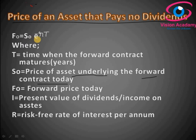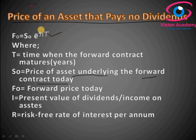E is the mathematical irrational number, approximately 2.718. R is the risk-free rate of interest per annum, and T is the time when the forward contract matures. So the formula is F0 = S0 × e^(RT), where S0 is the contracted price today, R is the risk-free rate, and T is the time to maturity. Using this formula, you will find the price of an asset in the futures market — that is, the price after maturity.